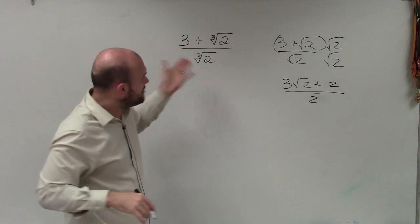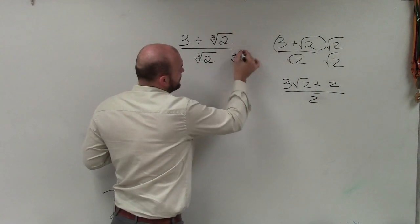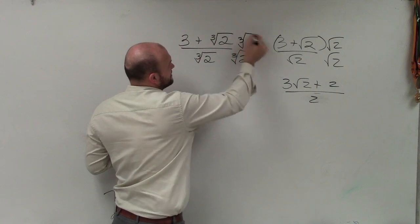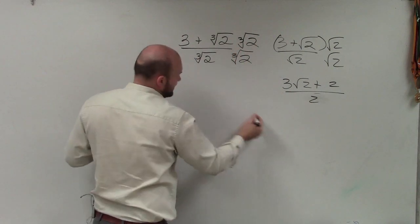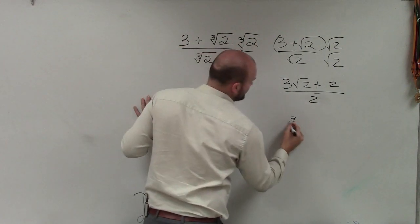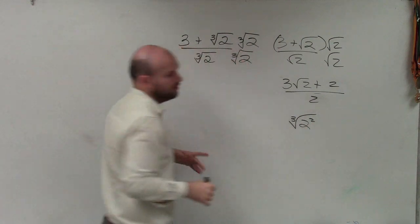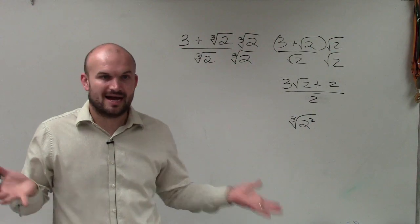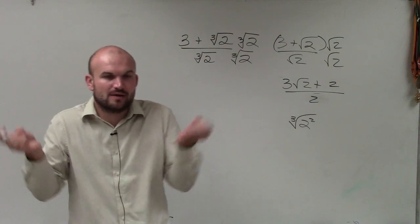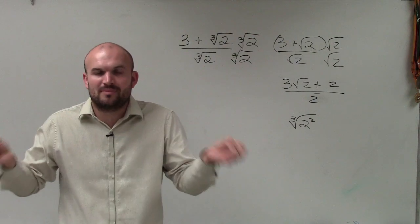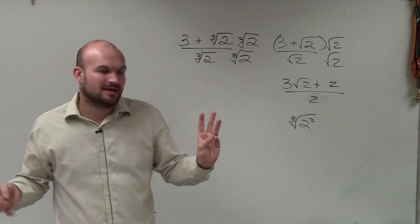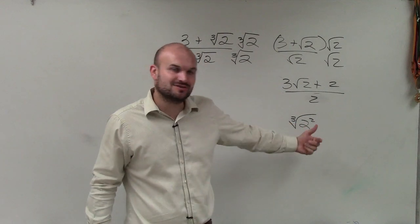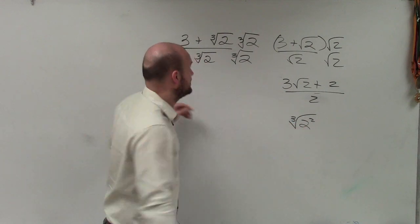So if I multiply this by the cube root of 2, then with the cube root of 2 on the top and the bottom, what I'm going to get is the cube root of 2 squared. Well, the cube root of 2 squared does not simplify anything. Remember, we're taking the cube root — we're asking what number multiplied by itself three times. This is just 2 multiplied by itself two times, so I can't take the cube root of that number.